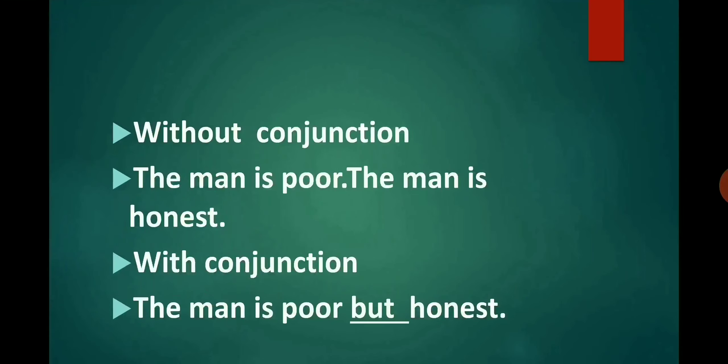The second example of conjunction joining sentences is: The man is poor. The man is honest. Both sentences are describing the quality of a man. You can join them with the conjunction 'but' and the sentence will look different but without affecting the meaning: The man is poor but honest. Here 'but' made the sentence easy to read and write without changing the meaning.